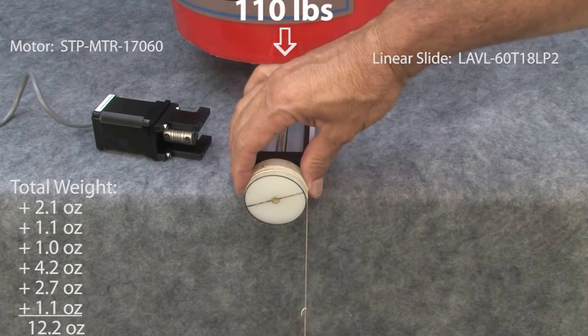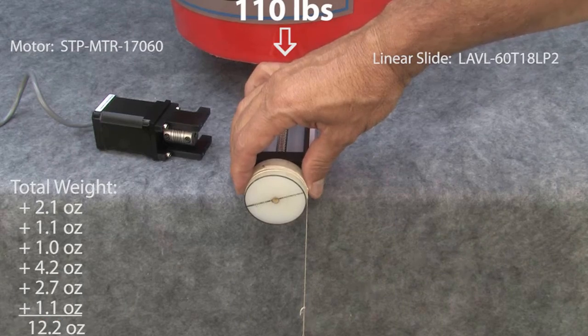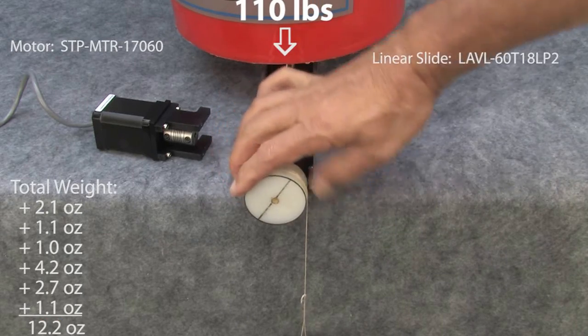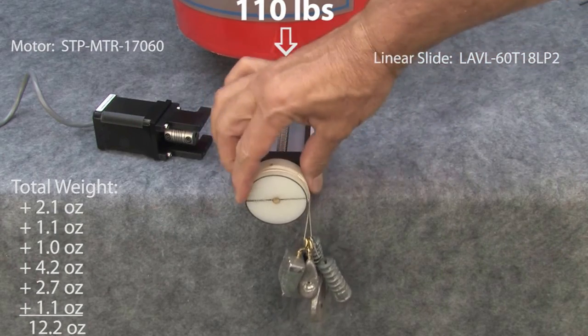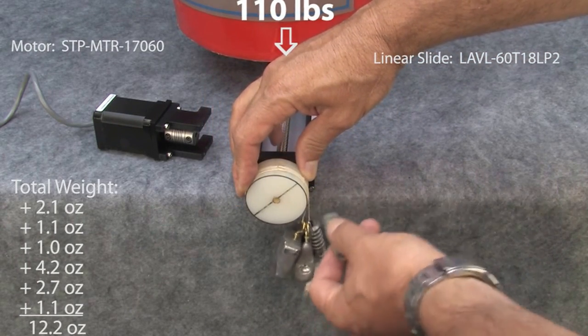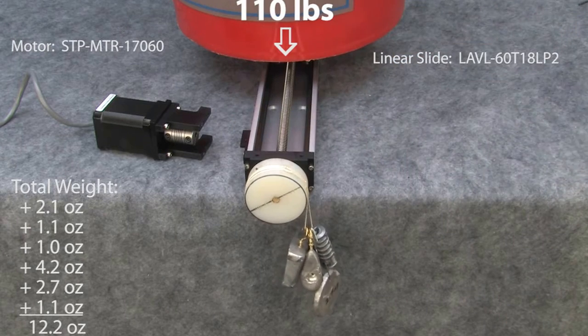Ah, there we go. That was around 12 ounces. So our calculated number was off by 700%. It's pretty impressive that we only need a few ounces to move this 110 pound load, but why is it so much different than the number we calculated?